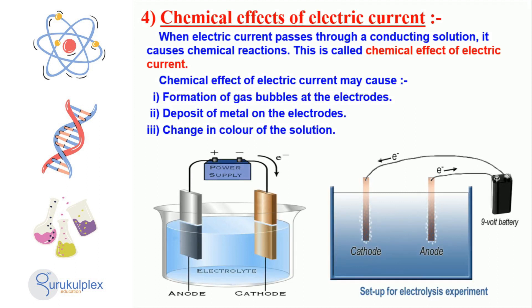Passing electric current through a conducting solution can result in gas bubbles forming at the electrodes, metal being deposited on the electrodes, and a shift in the solution's color. All of these reactions are triggered by the electric current in the solution.